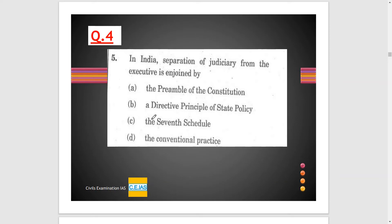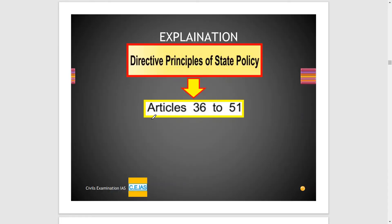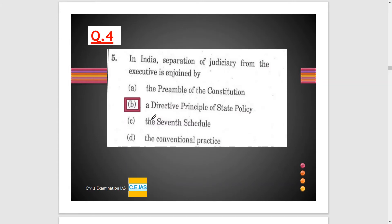The fourth question talks about: in India, separation of judiciary from the executive is enjoined by which provision? The Directive Principles of State Policy cover Articles 36 to 51. In Article 50, it is clearly mentioned to separate the judiciary from the executive in the public service of the state. Due to this explanation, we can assume that option B is the correct option.